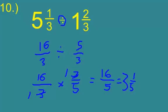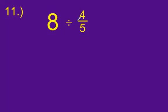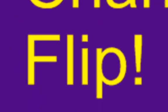Here we go, number eleven. Similar problem. Eight divided by four-fifths. Well, we know right away we can make eight over one. Now, it's just a matter of copy, change, flip. What does flip mean? Reciprocal.